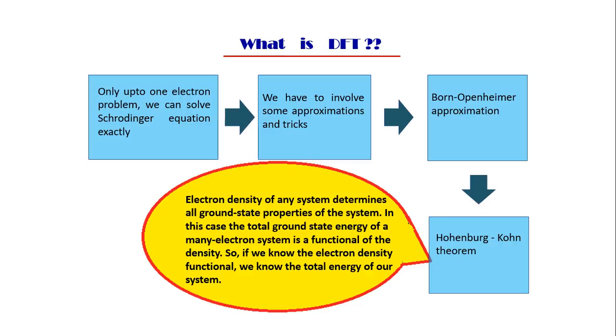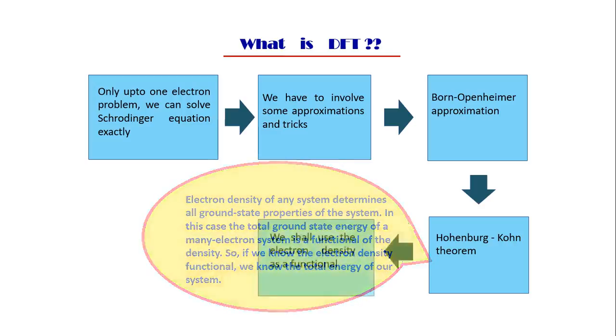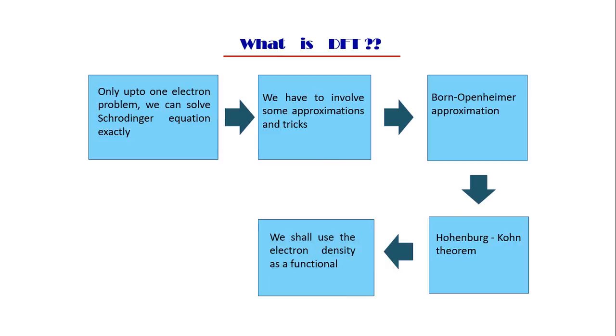And then comes the Hohenberg-Kohn theorem. It says that the electron density of any system determines all the ground state properties of the system. Now see, if you know the electron density, you know everything, right? So we shall use electron density as a functional and finally we shall calculate all other ground state properties.